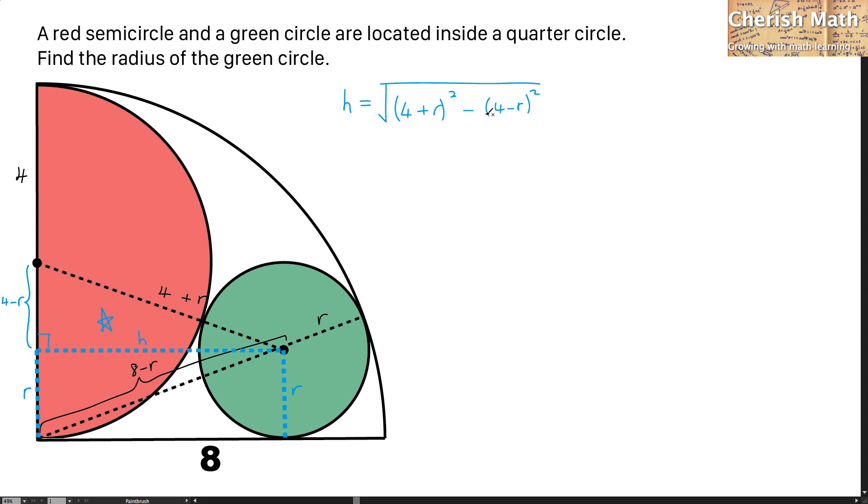This is the value of the h by using Pythagorean Theorem. And by using the same method, I'm going to work out what is the value of h by referring to the triangle at the lower part here where I'm doing the highlight with the star. Now, that would be h equals the square root of (8 minus r) squared minus r squared.